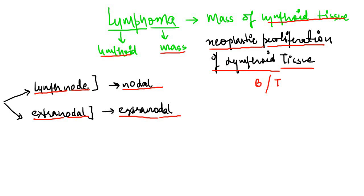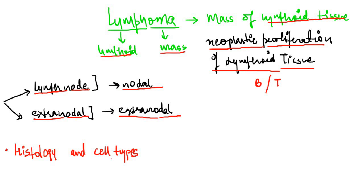So that was one way of classifying the lymphomas. There is another way of classifying the lymphomas which is predominantly based on the histology of the lymph node or the lymphoma, and what are the constituent cell types. On that basis, we divide the lymphomas into Hodgkin's lymphoma and non-Hodgkin's lymphoma.